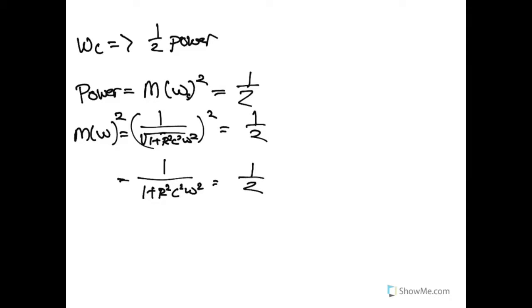Rearranging all of our values here, we end up with one plus R² C² ω² is equal to two, which makes R² C² ω² equal to one.